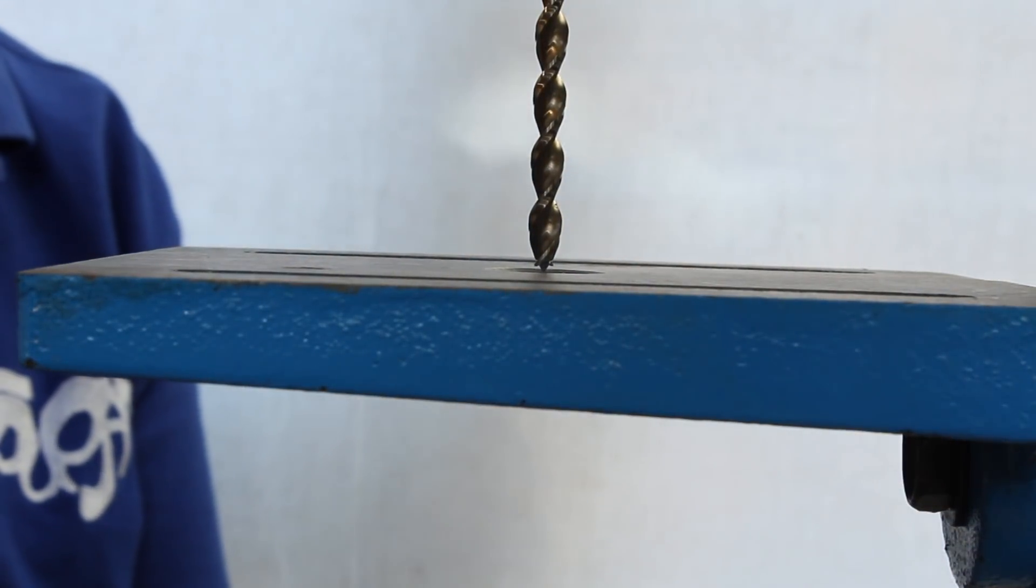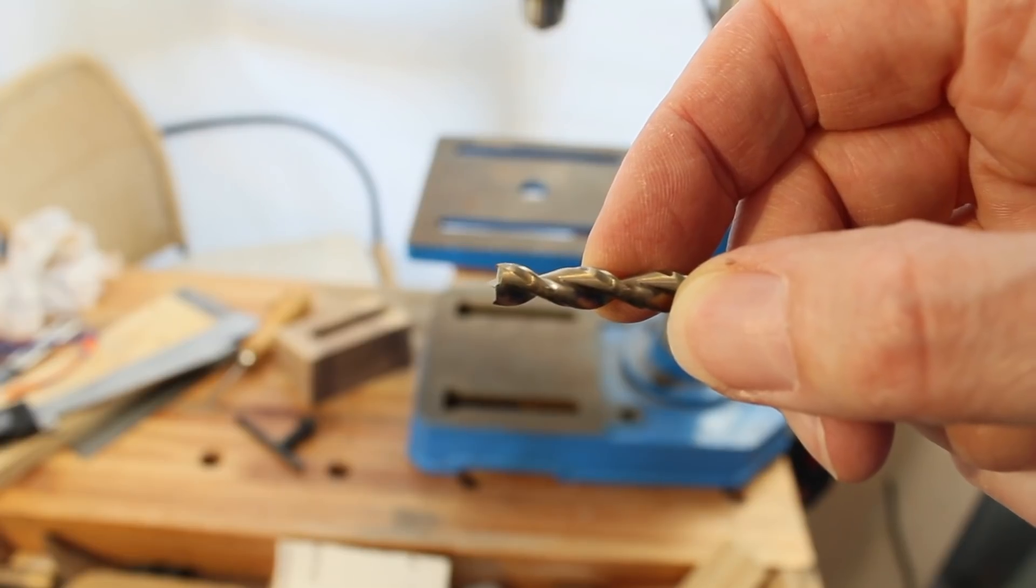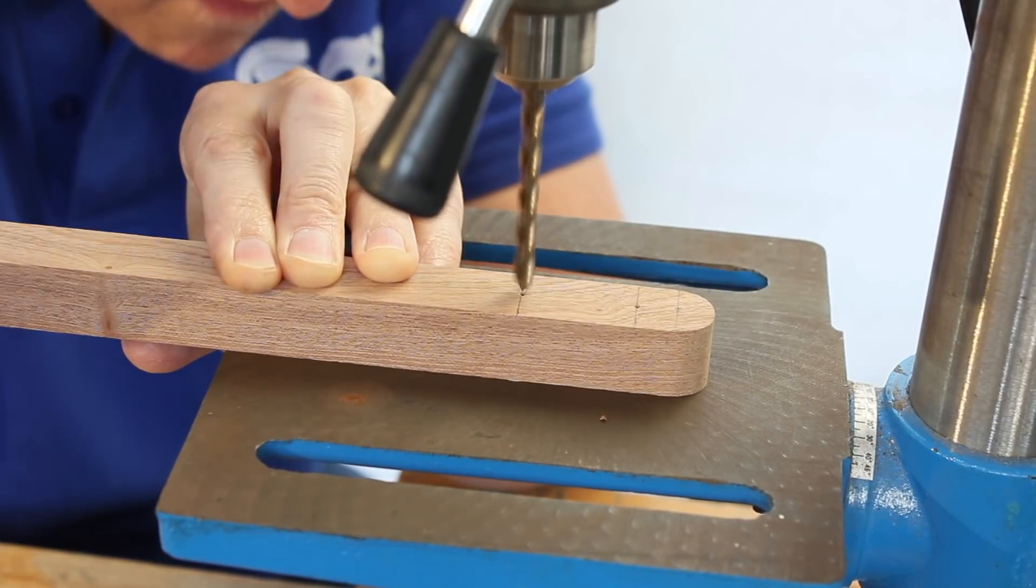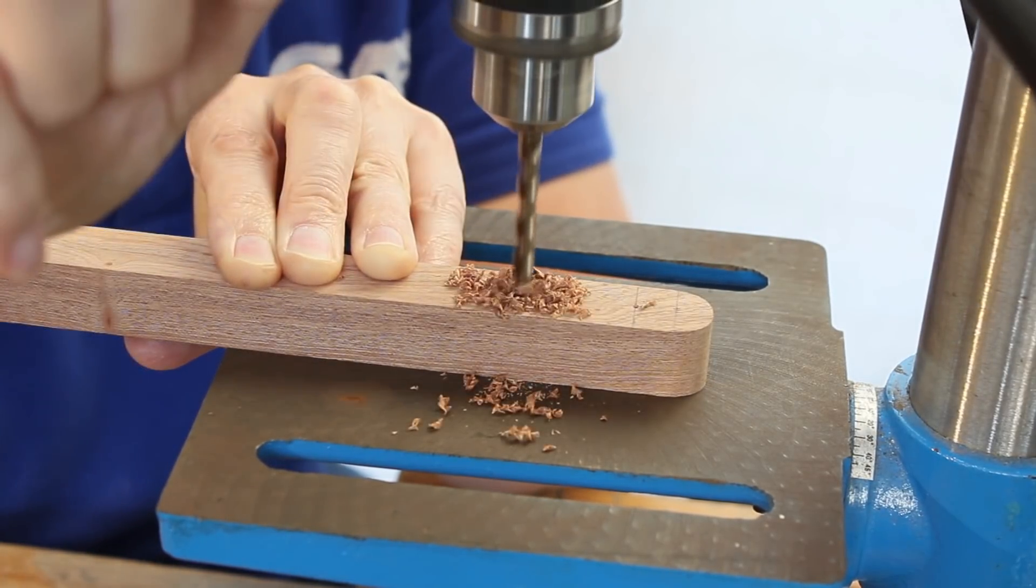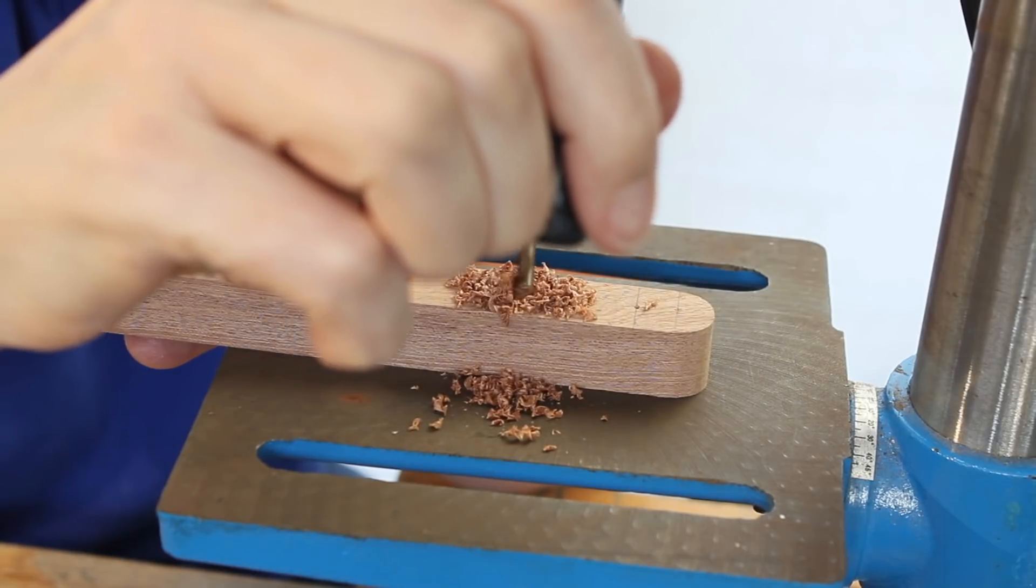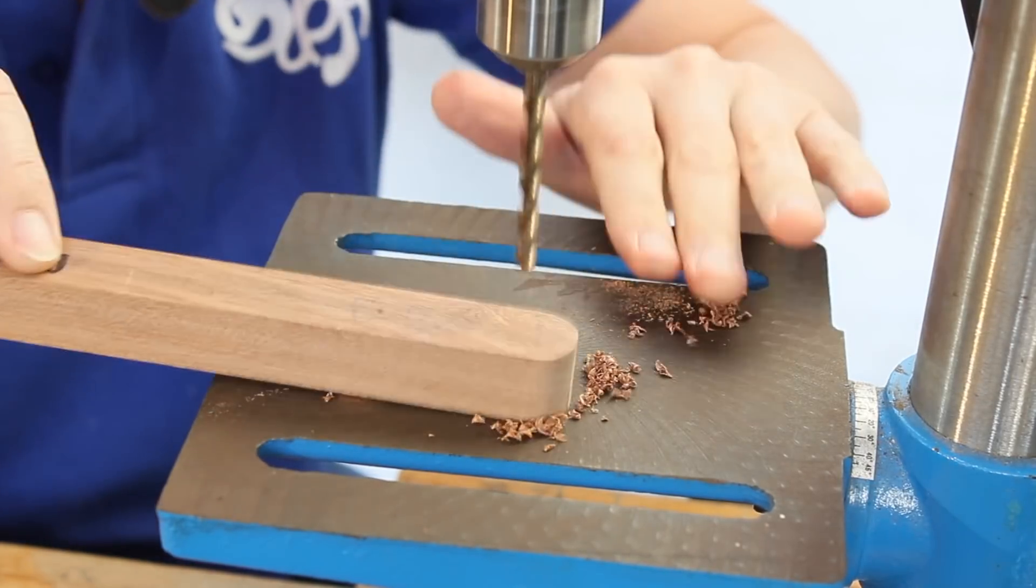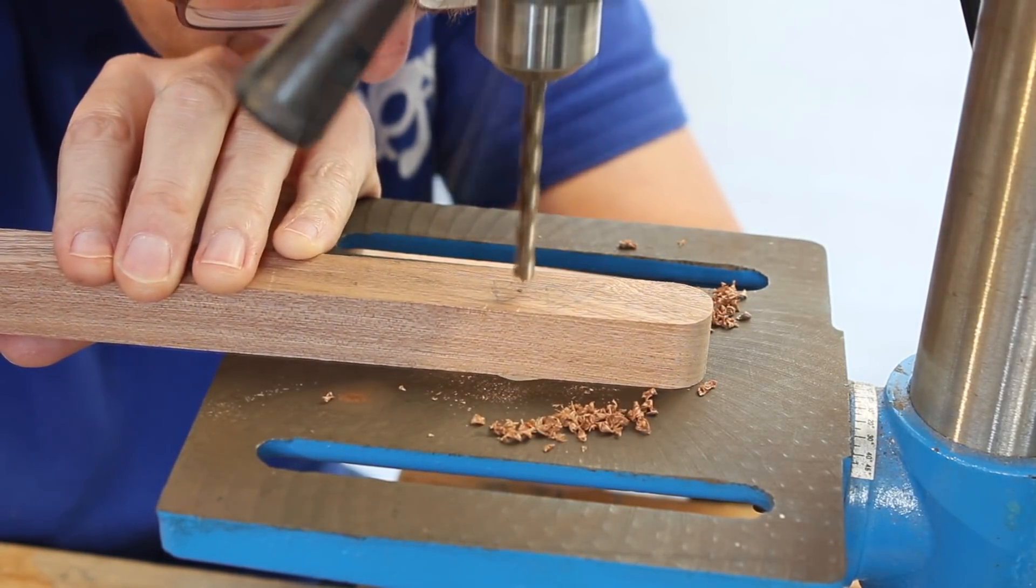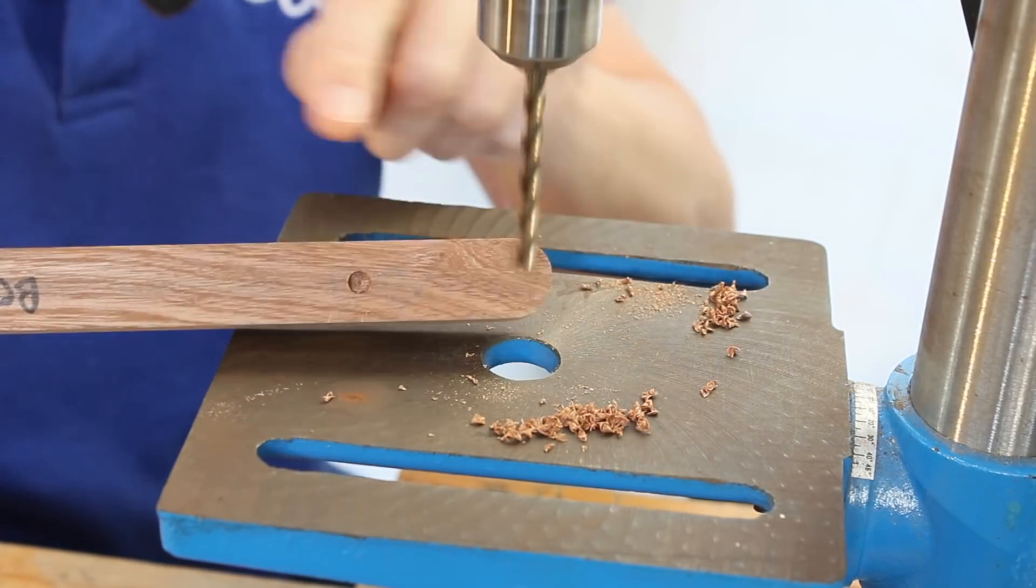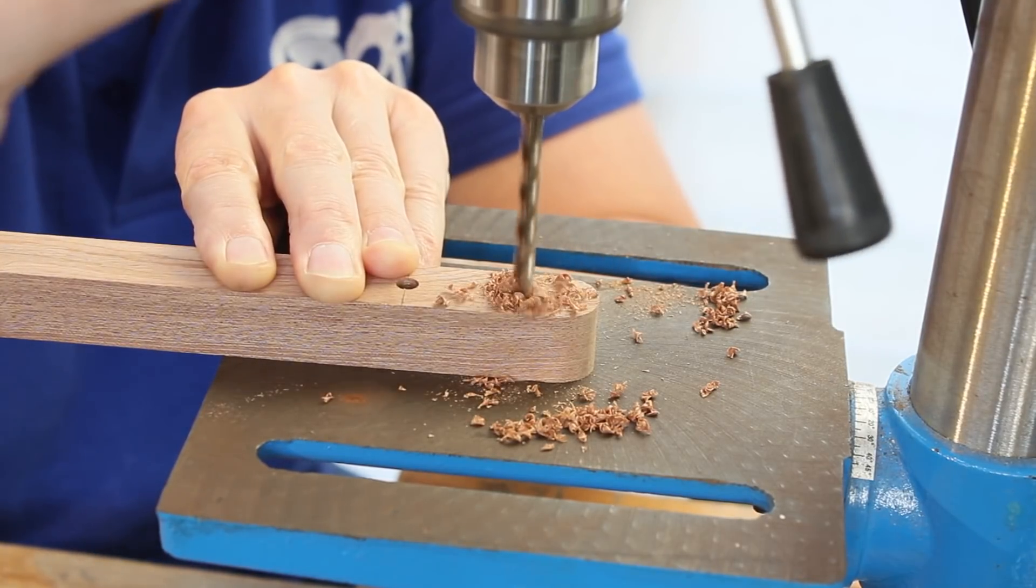I've got the depth stop set so all being well the tip should just emerge from the other side and then I'll be able to drill in from that side so we don't get any tear out. Now I've got a very slight hole to be able to now line up. Perfect. Even got a little plug in the hole. Perfect.